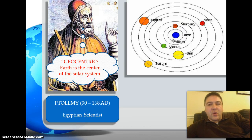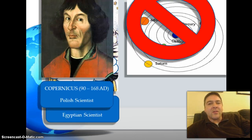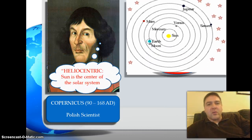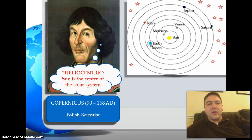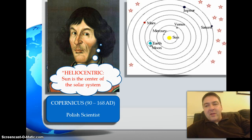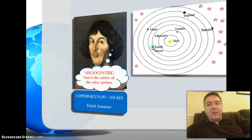This geocentric model of the solar system held for thousands of years until Copernicus came along and said that's not what he was seeing in his calculations. Copernicus replaced the geocentric theory with the heliocentric theory, moving the Earth out of the middle and placing the sun in the center.